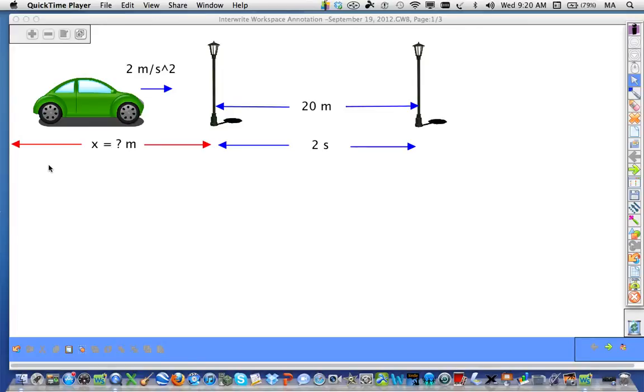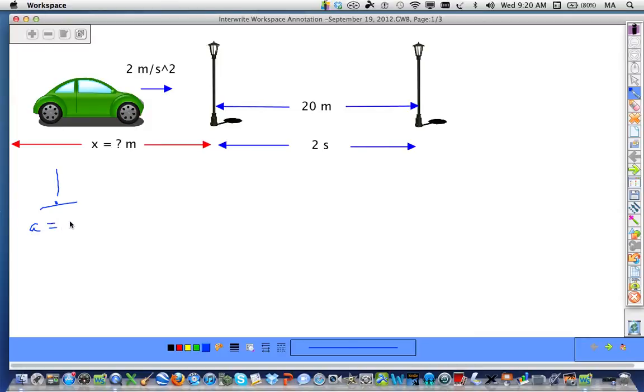Let's first label our knowns and unknowns. Under the exclamation column we know the acceleration would be 2 meters per second squared. We know the initial speed of the car to the left of the lamppost, which is implied as 0 meters per second, so it's being at rest. We also know the distance between the lampposts is 20 meters, and the car spends a total of 2 seconds between the lampposts.